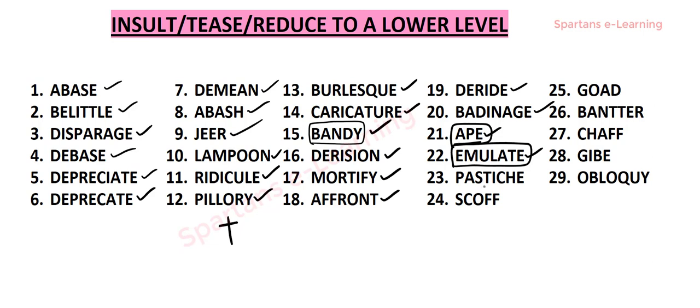Our next word is pastiche. Pastiche is a noun meaning an imitation of another style in musical composition or in writing. So imitating someone in music or in their writings is called pastiche — it is like copying.